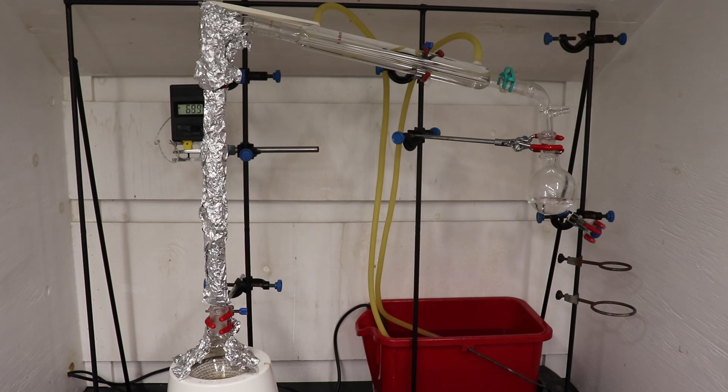During this time, the ethyl-2-bromopropionate, which boils at around 160 to 166 degrees Celsius, began climbing up the column. Soon enough, the stillhead temperature began rapidly climbing, and distillate was starting to be collected.